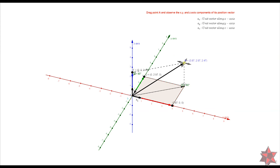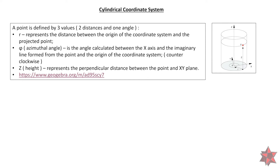The cylindrical coordinate system defines a point by three values — two distances and one angle. Here, r represents the distance between the origin of the coordinate system and the projected point on the plane, also known as the radius. The azimuth angle is calculated between the X-axis and the imaginary line formed from the origin and the projection of the point. The height, Z, represents the perpendicular distance between the point and the XY plane.